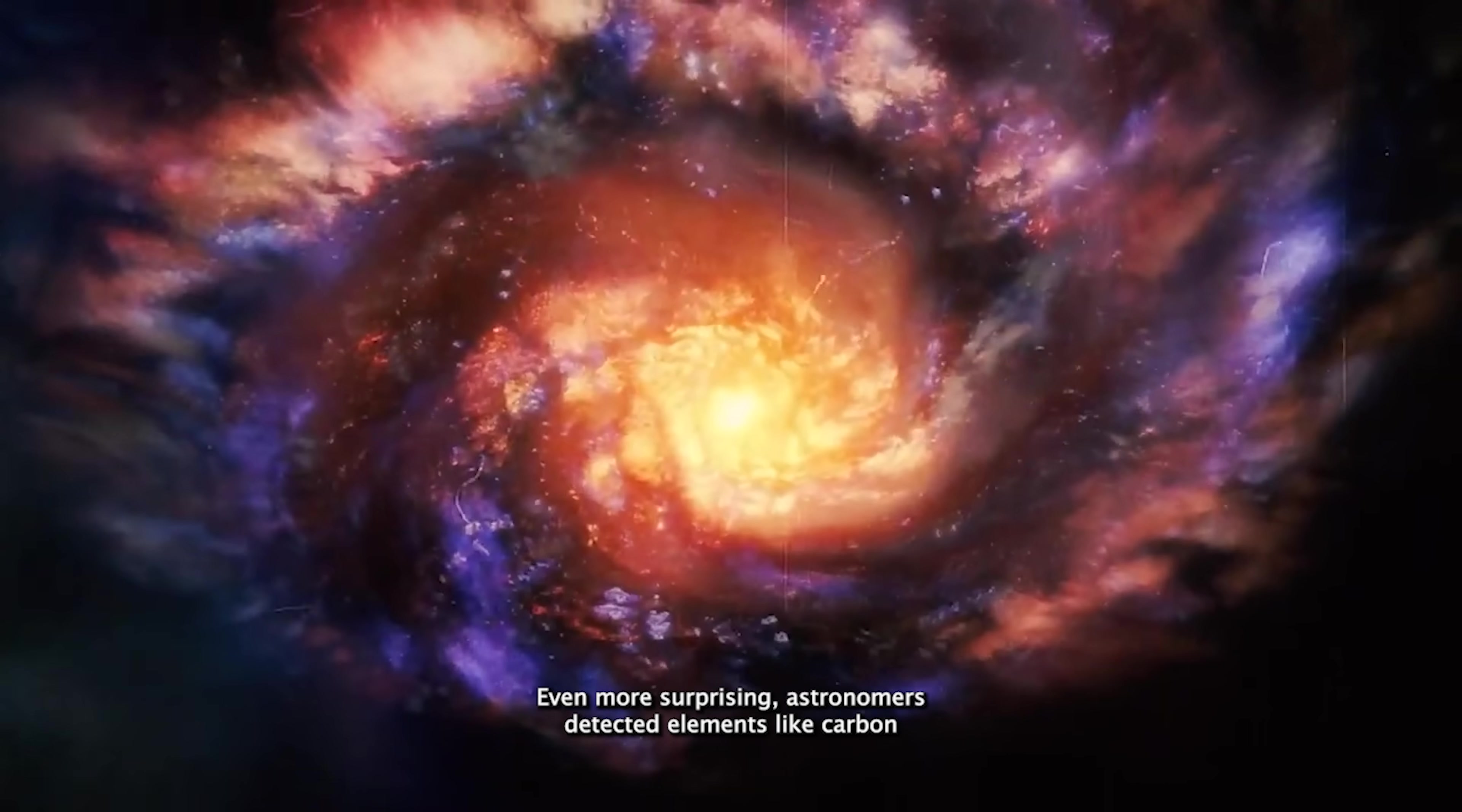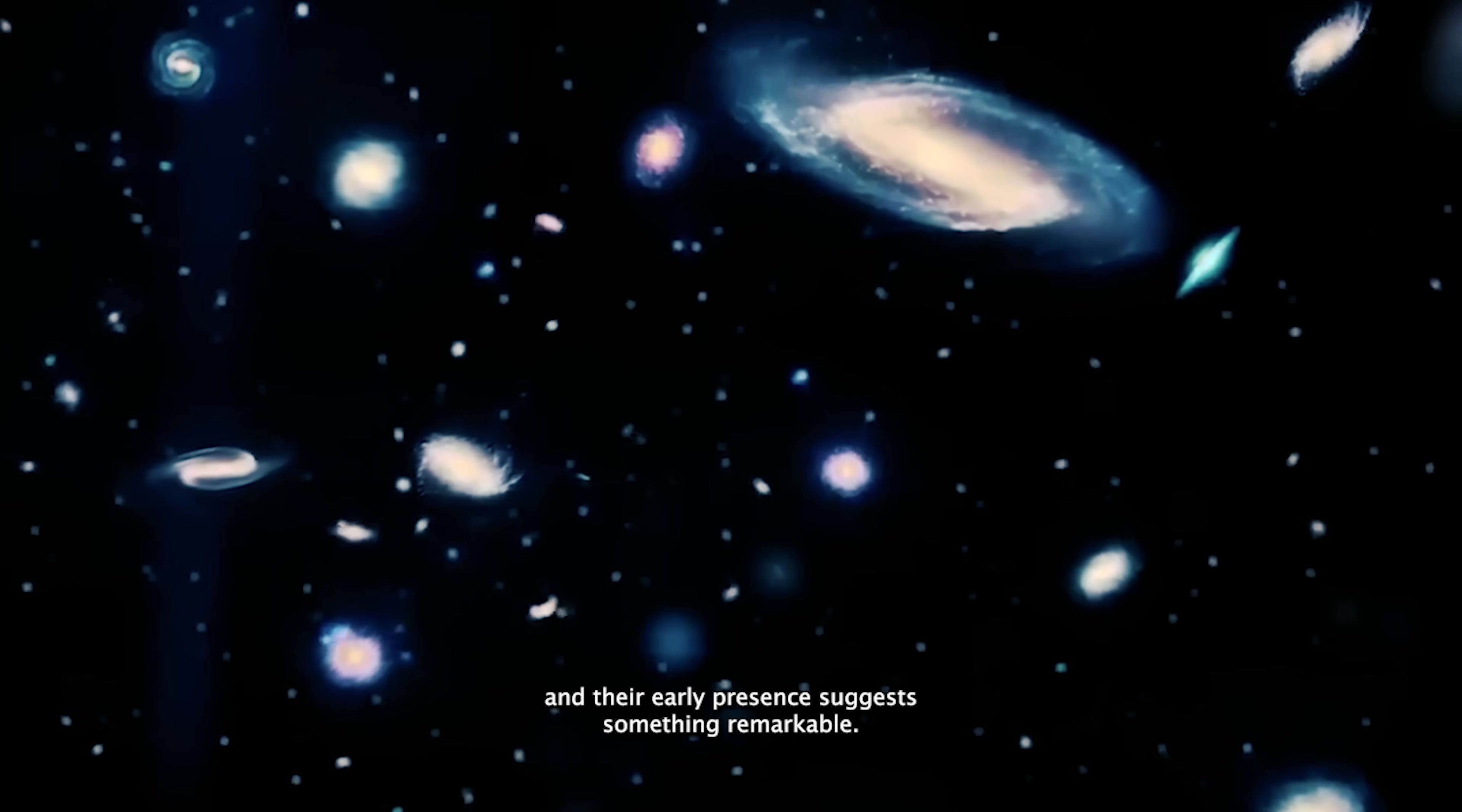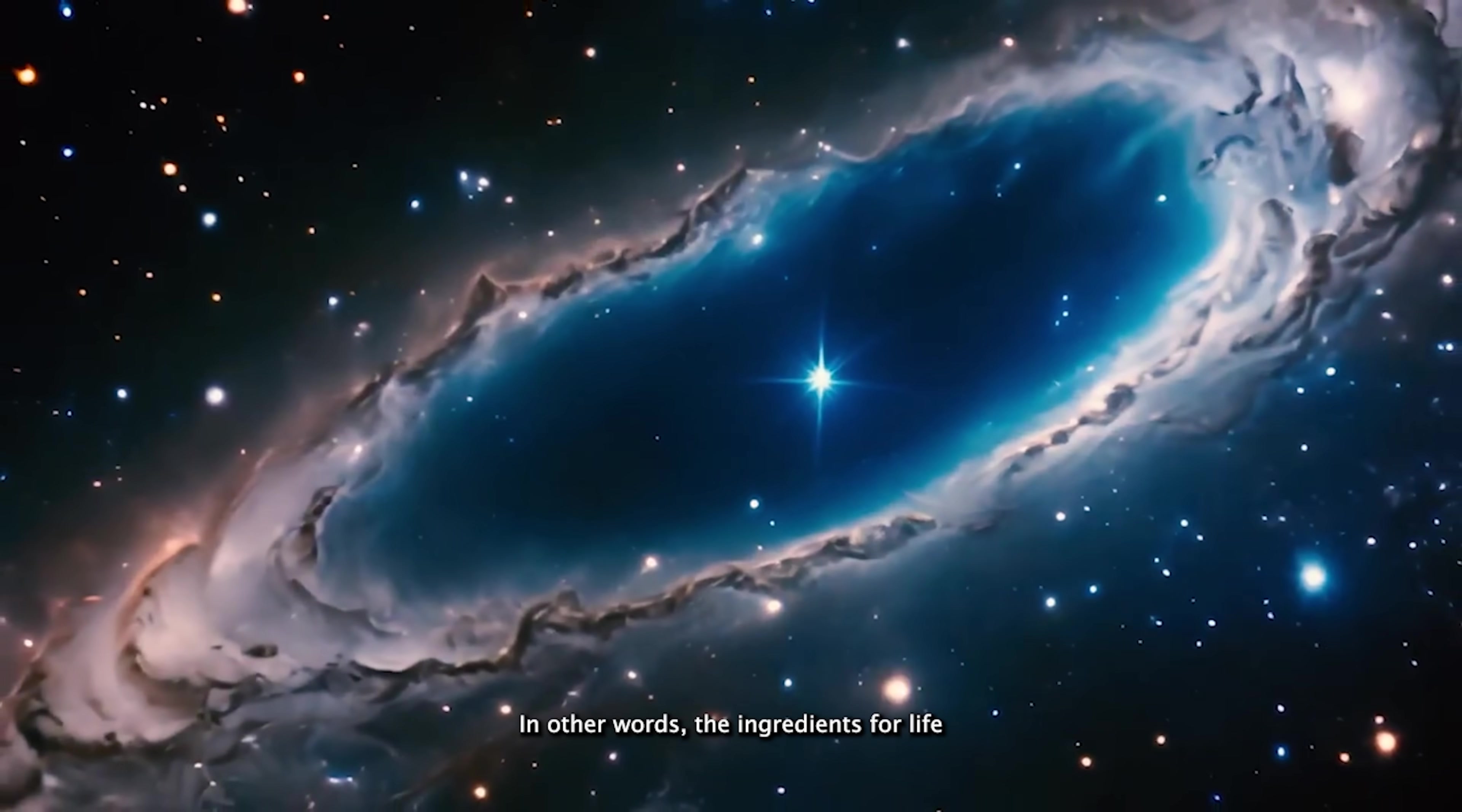Even more surprising, astronomers detected elements like carbon and even oxygen in galaxies just 350 million years post-Big Bang. These are the basic building blocks of life. And their early presence suggests something remarkable. Multiple generations of massive stars may have lived and died before we even caught a glimpse of these galaxies. In other words, the ingredients for life may have existed almost from the very beginning.